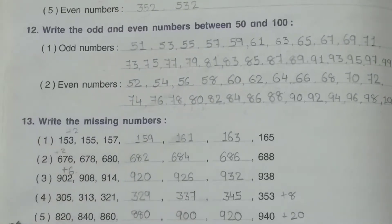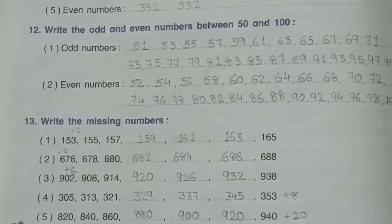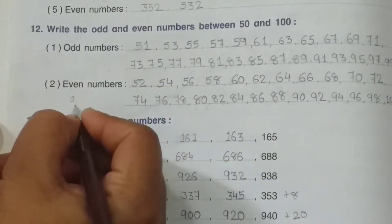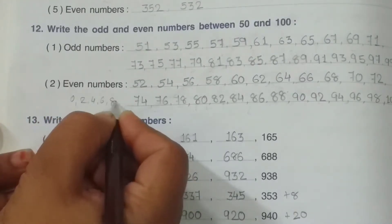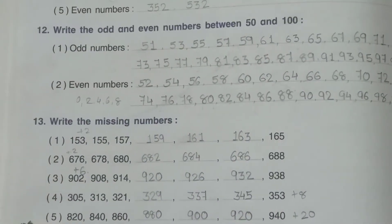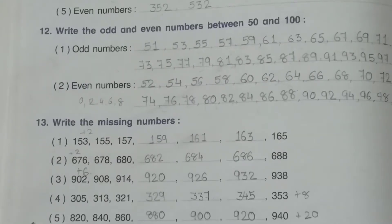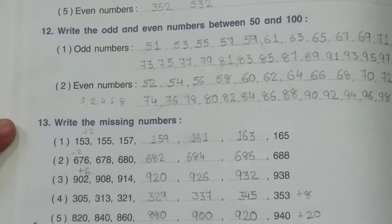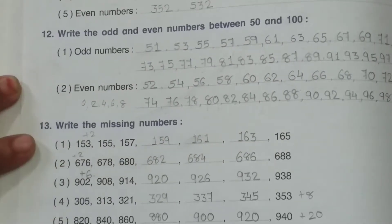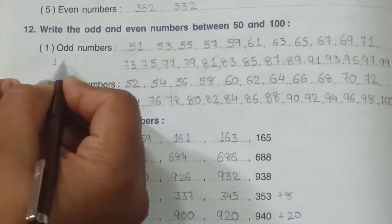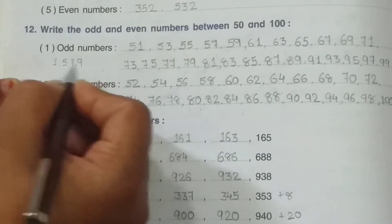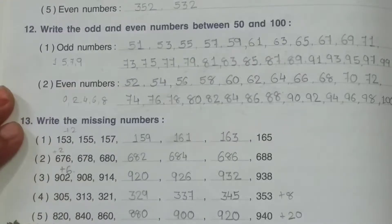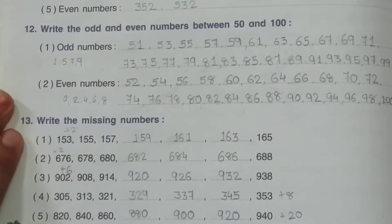Again, I tell you that whichever number — see, 0, 2, 4, 6, 8 — if these are in the unit place, that number is an even number. And besides these, which numbers are left? 1, 3, 5, 7, 9 — if these numbers are in the units place, they are the odd numbers. Okay.